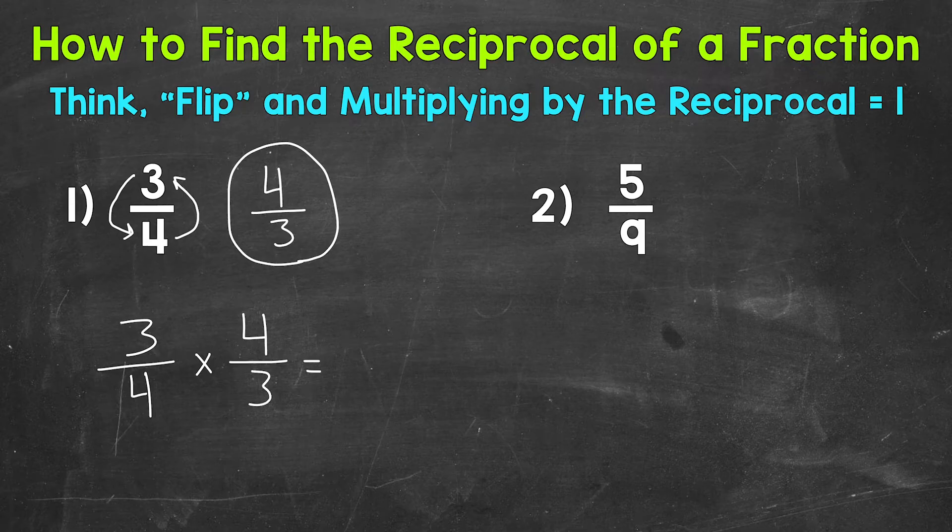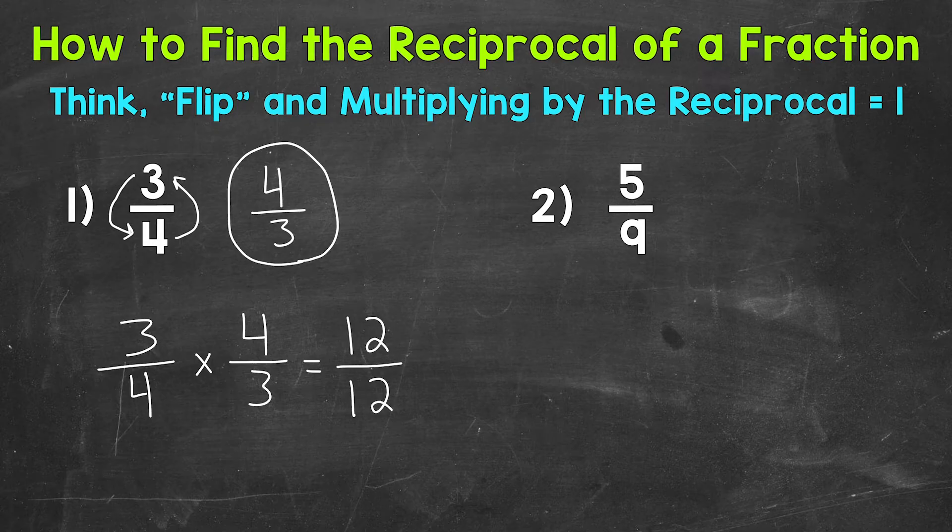So multiply straight across numerators, 3 times 4 is 12, denominators, 4 times 3 is 12. So same numerator, same denominator, that equals 1.